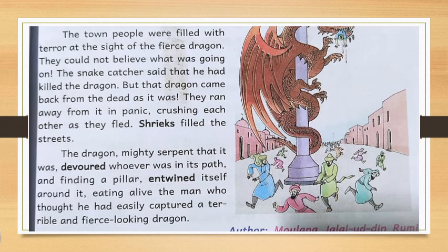So, this was the lesson about the snake catcher. It is written by Maulana Jalaluddin Rumi. All the highlighted words throughout the lesson — like craning, glimpse, jostled, frozen, shrieks, diverged, entwined — learn these new words. I already gave them in the previous class. Read these new words and their meanings as well.